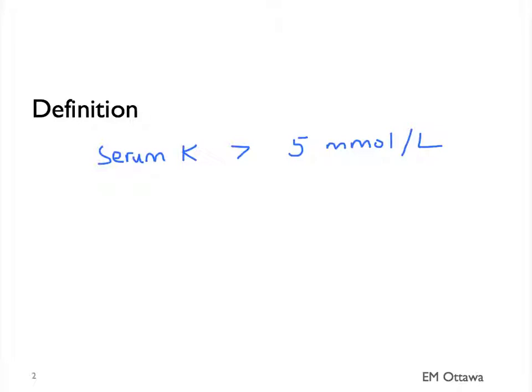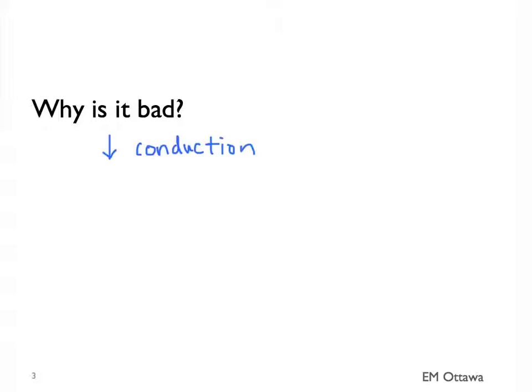Why is hyperkalemia a problem? Hyperkalemia causes poor conduction in the heart. It eventually causes ventricular fibrillation and asystole. Therefore hyperkalemia is a must-not-miss diagnosis.